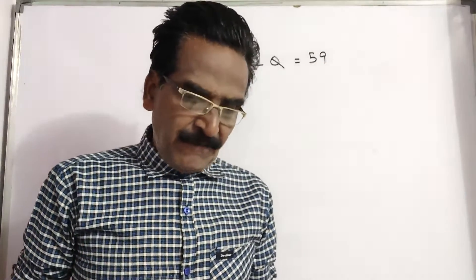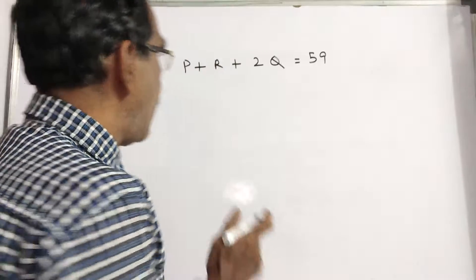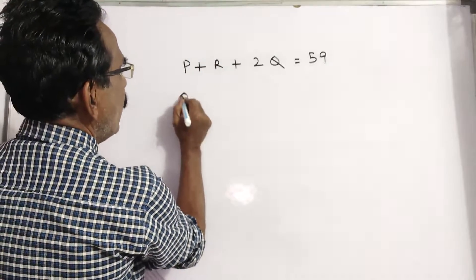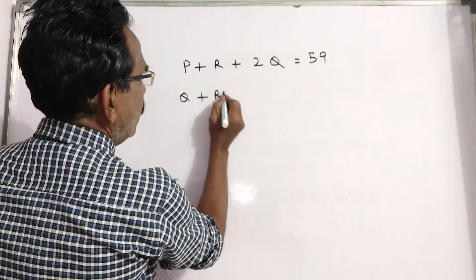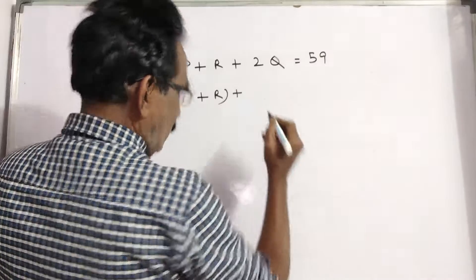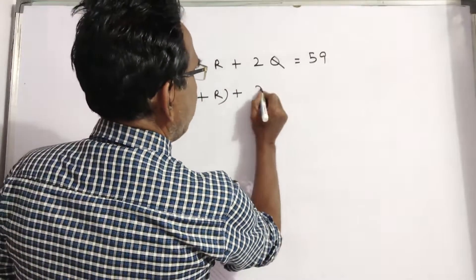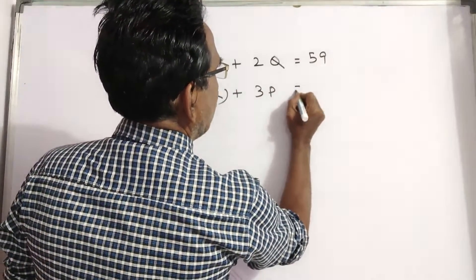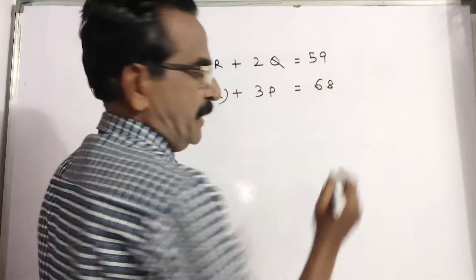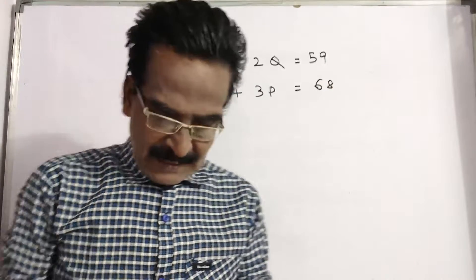If the ages of Q and R are added to twice the age of P, then the sum becomes 68.